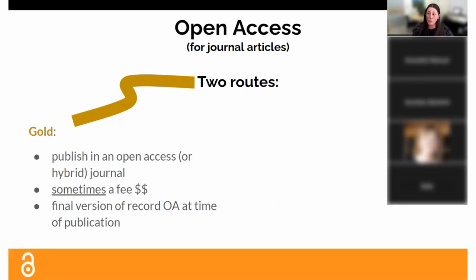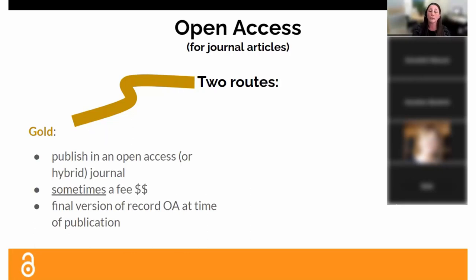There are two main routes. The gold route, which people are most familiar with, means you publish in an open access journal — sometimes these are hybrid journals, which I'll explain in a minute. Sometimes there's a fee, though actually that's not always true across all disciplines. The final version of record — the version with the publisher's branding, typesetting, and pagination — is the version that's freely available at the time of publication. That's the gold route.